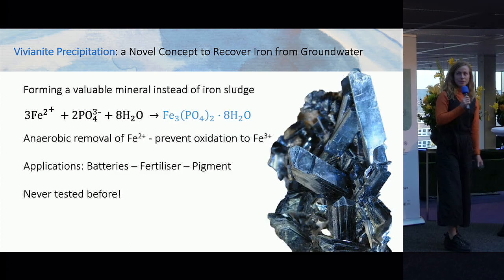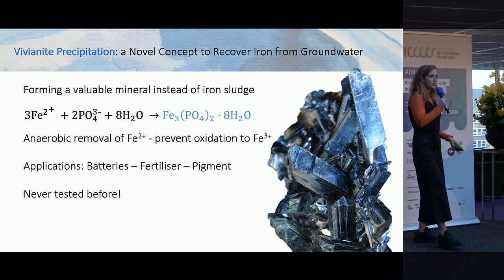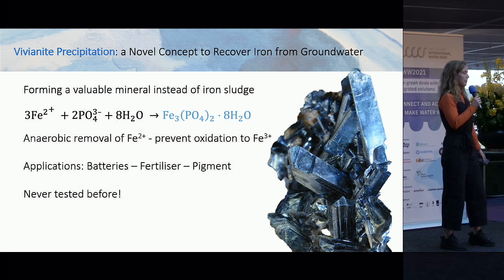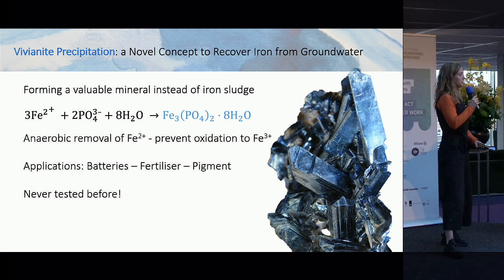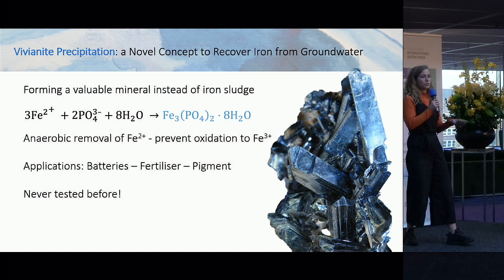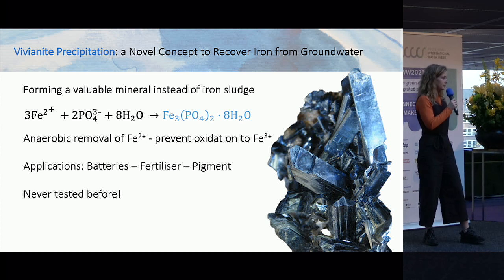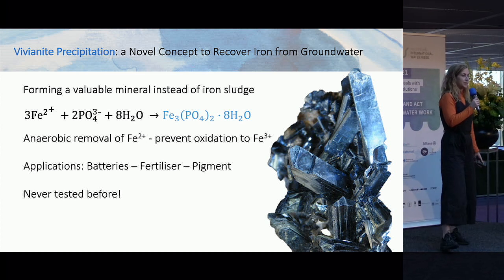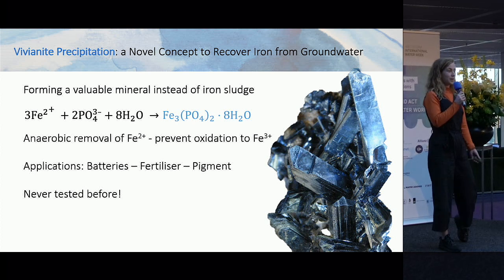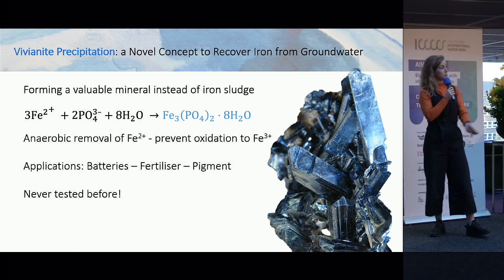What I proposed and researched is whether we can form a valuable and compact mineral instead of this watery iron sludge. I tried to form vivianite — an iron-2-phosphate mineral — so the oxidation to iron-3 should be avoided. The iron is removed anaerobically from the water by dosing phosphate. Vivianite has quite some applications, for example in lithium batteries, as a slow phosphorus release fertilizer, or even as a pigment because it has a beautiful blue colour.